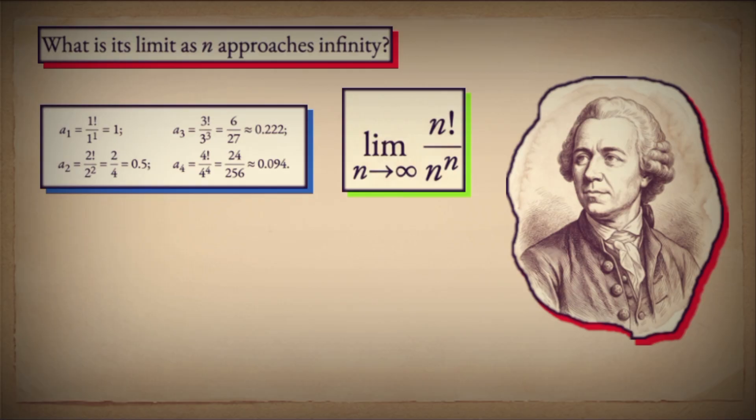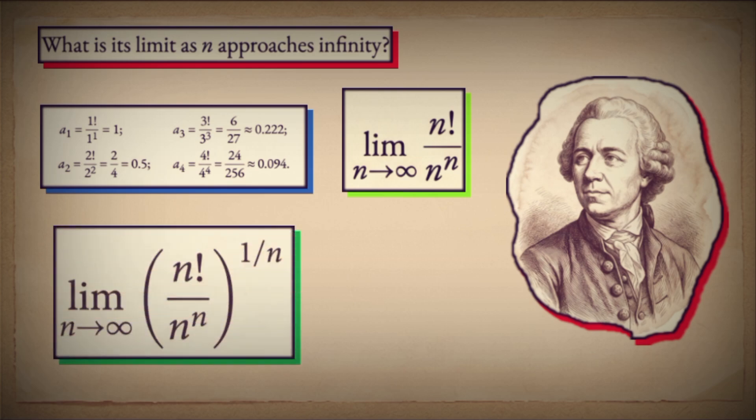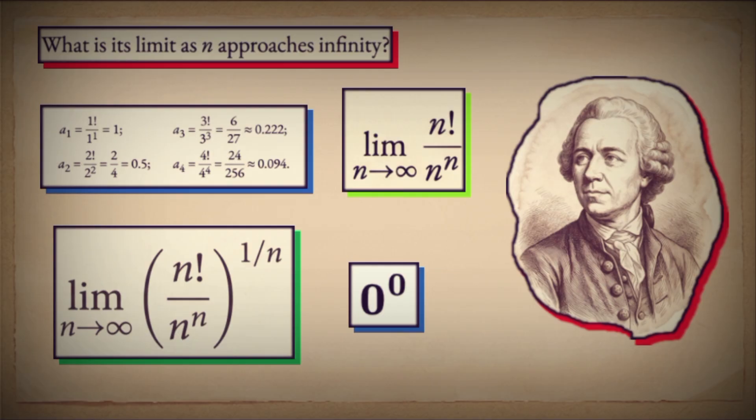This simple limit leads to a genuinely tricky problem: what is the nth root of that shrinking number? That's zero to the power of zero territory — indeterminate, deep water. Today, we're not just stating a result. We're walking the full path Euler might have taken. We'll prove our intuition correct, then dismantle it to find a more beautiful truth underneath.